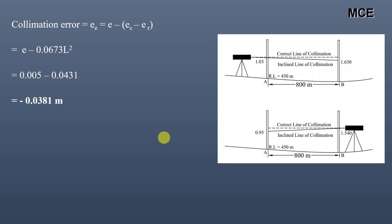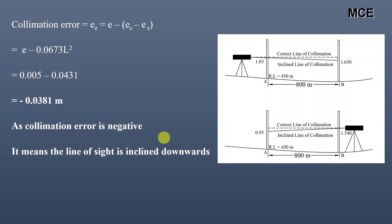The collimation error is negative, which means the line of sight is inclined downwards, as shown in the figure. This is how we calculate the correct reduced level of stations using reciprocal leveling and also calculate the various types of errors that occur due to long range sights.